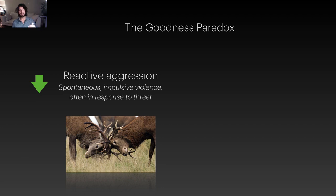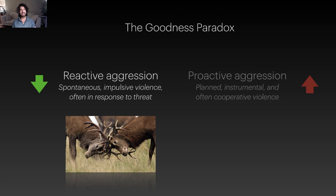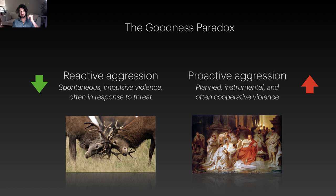At the same time, we've ramped up what Wrangham calls proactive aggression — instrumental, planned violence that has a particular goal you think about and prepare for. The murder of Caesar by the Roman senators is an example: something pre-planned and executed with great deliberation. Assassinations like this are examples of this cold, methodical rather than hot and impulsive type of violence. It's something we see much more in humans than in other species — you see it a little in chimpanzees or wolves, but humans have taken it to an entirely new level.